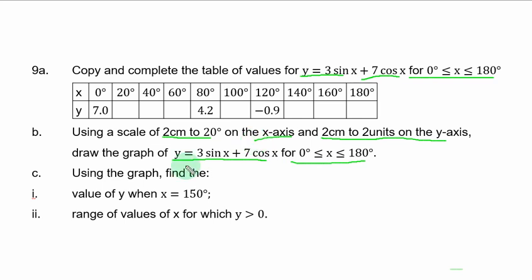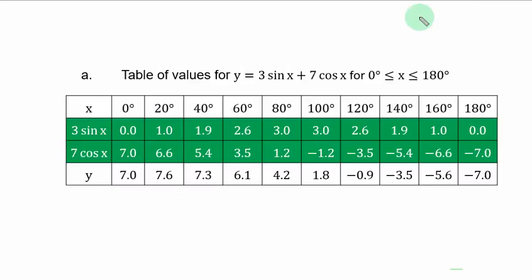Using the graph, find: Roman numeral 1 - the value of y when s is equal to 150 degrees. Roman numeral 2 - the range of values of s for which y is greater than 0. Part A of the question is to complete the table of values.